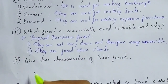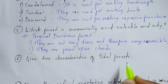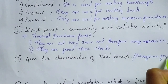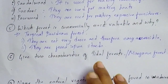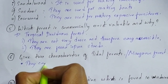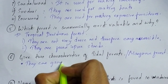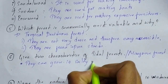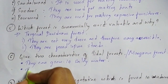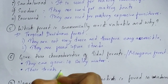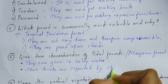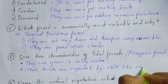Question number six: give two characteristics of tidal forest, also called mangrove forest. The two characteristics are: first, they can grow in salty water and are found in marshy areas; and second, their trunks are supported by stilt-like roots.